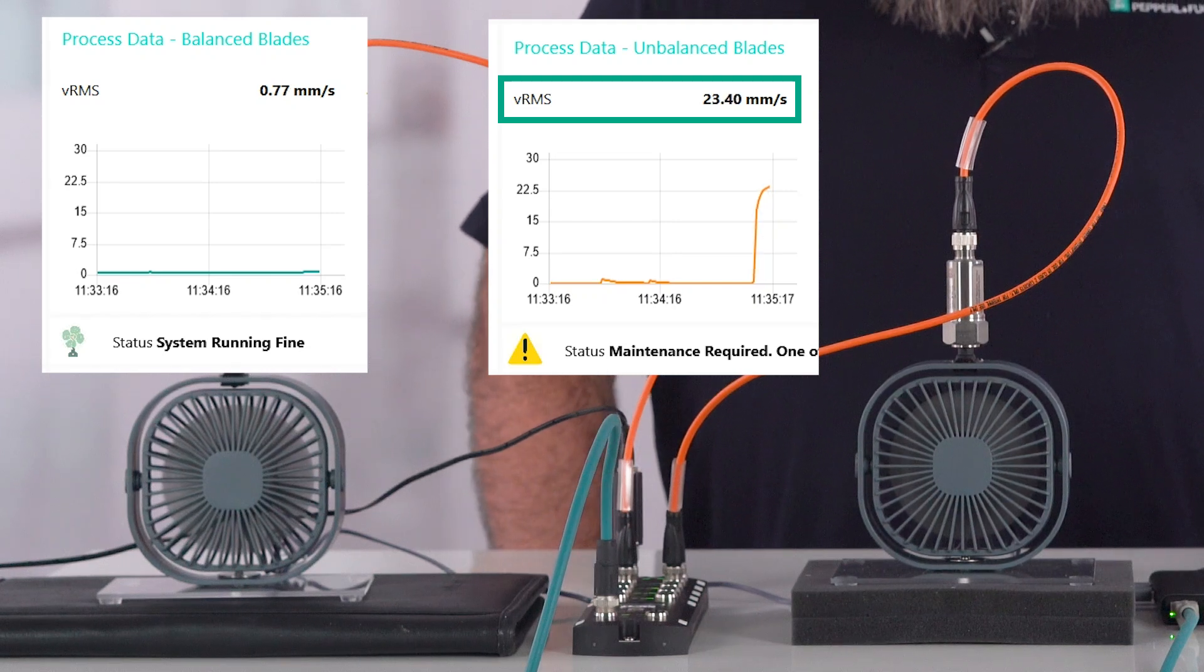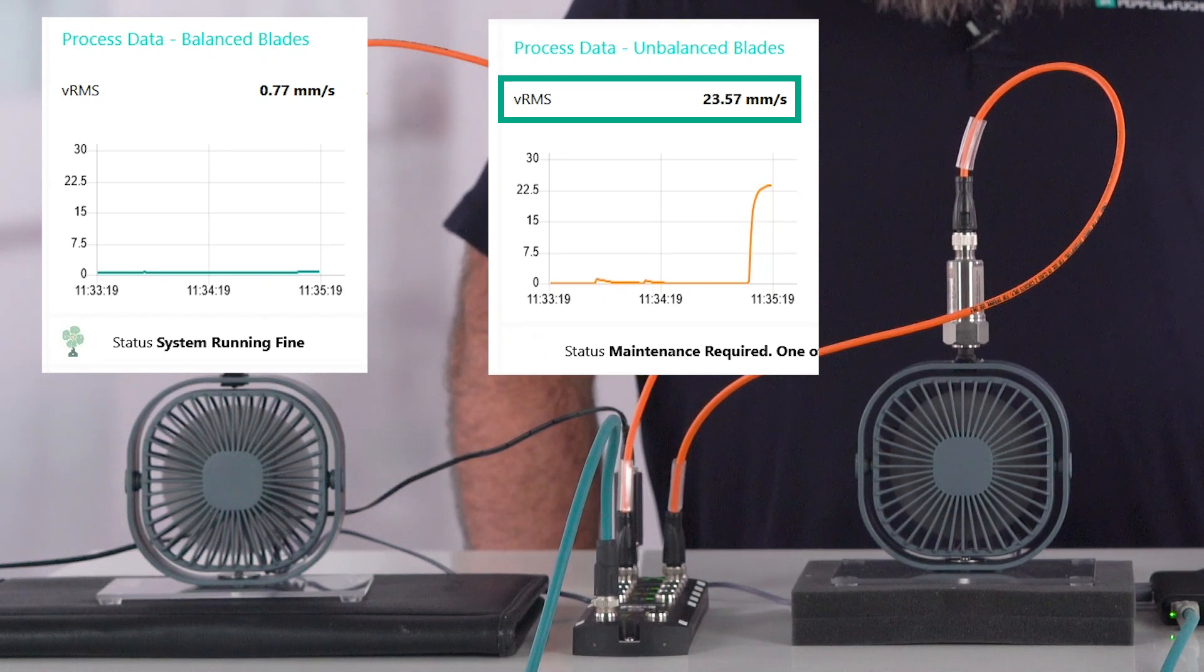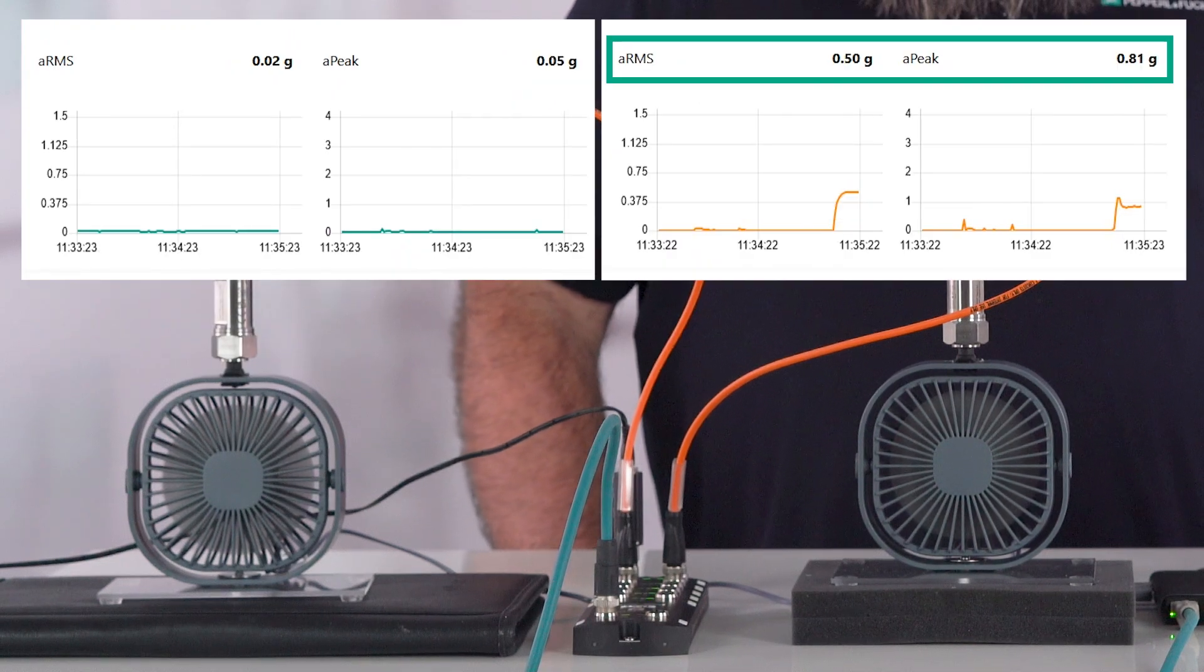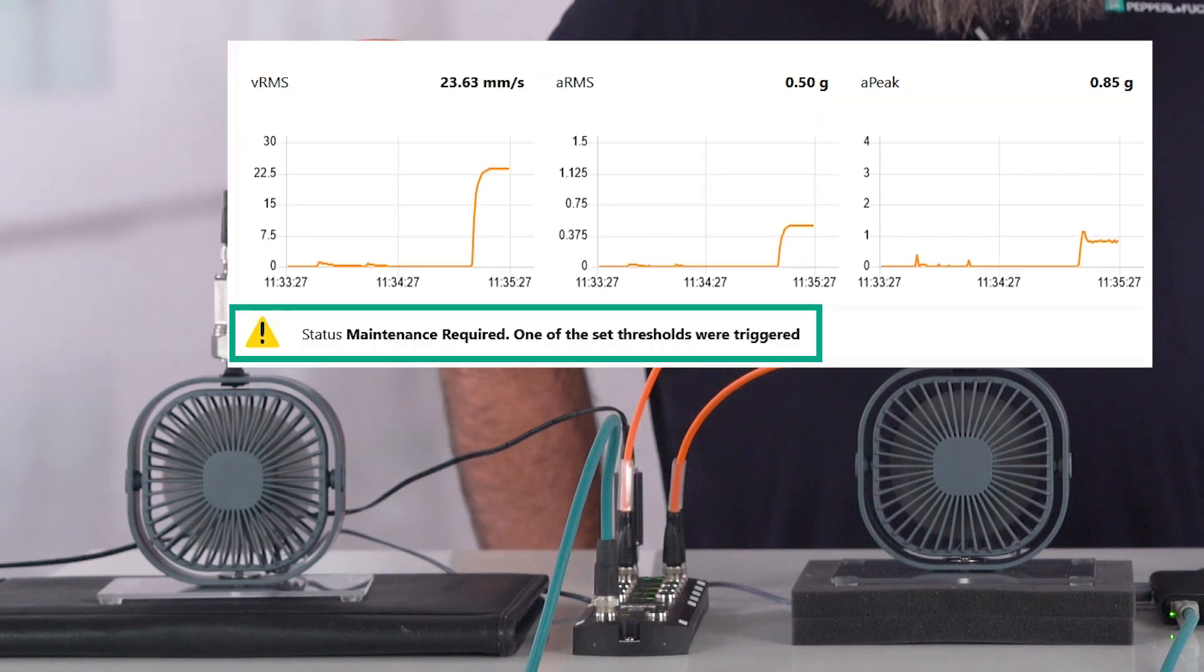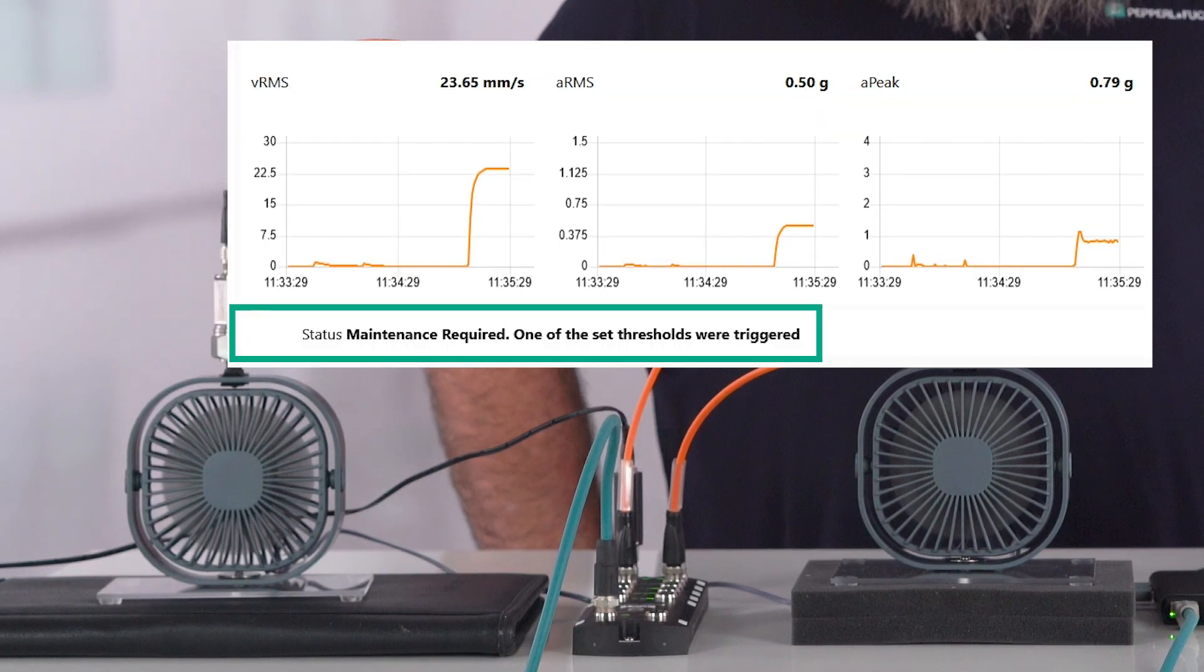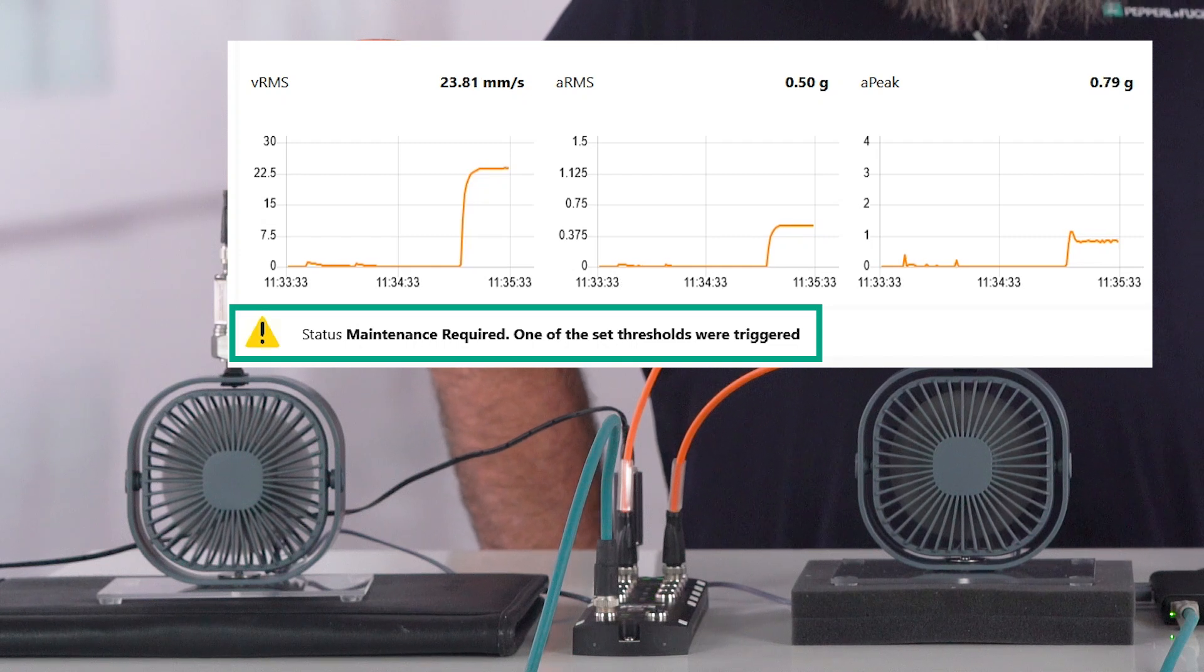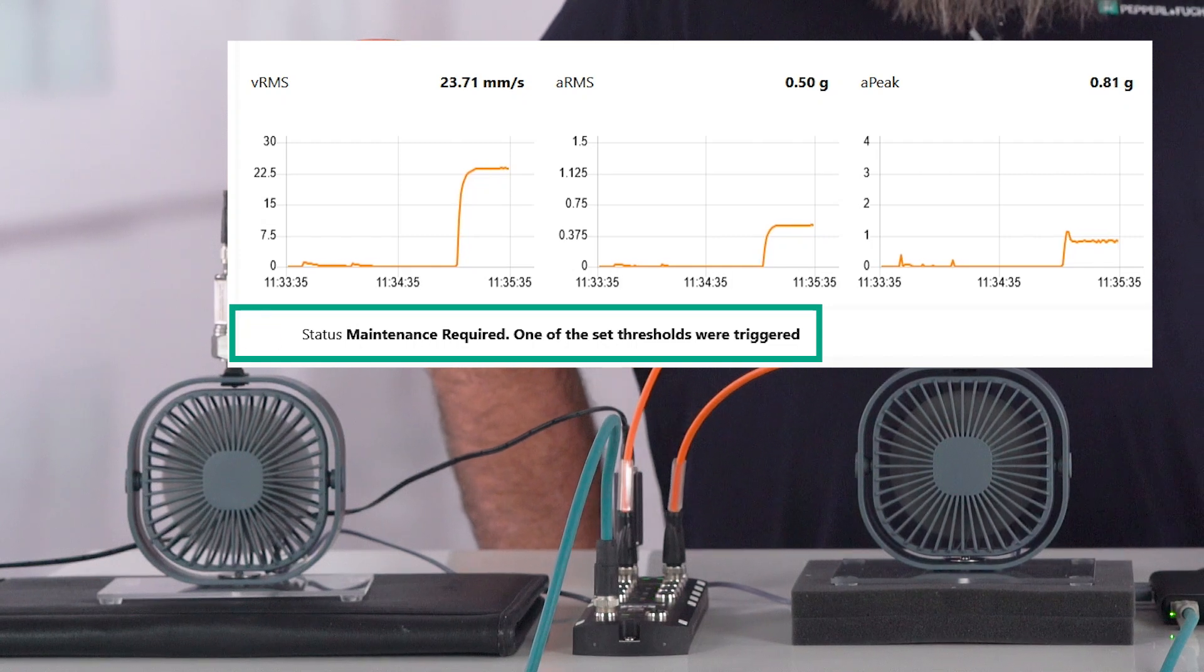Right away, you can see the fan is unbalanced because it has an RMS velocity that is much higher than Sensor 1. The acceleration RMS and peak values are also higher than Sensor 1, and the fan icon has changed into a warning icon. All of those indicators would tell an operator that the fan is in need of maintenance as the values are outside the normal operating parameters.